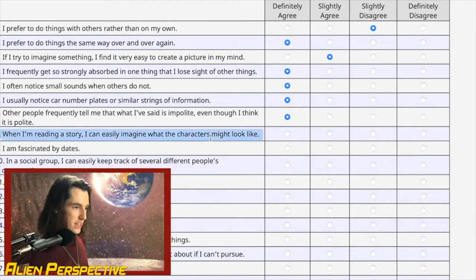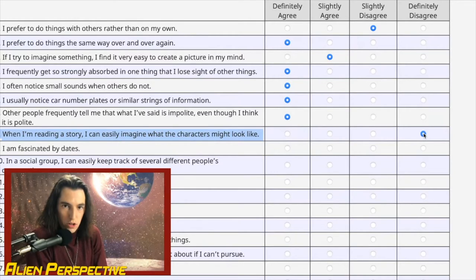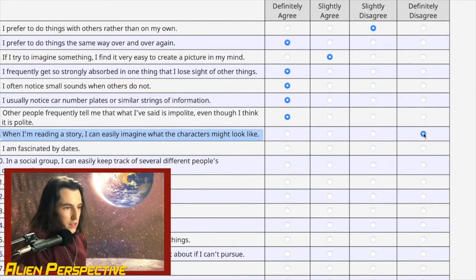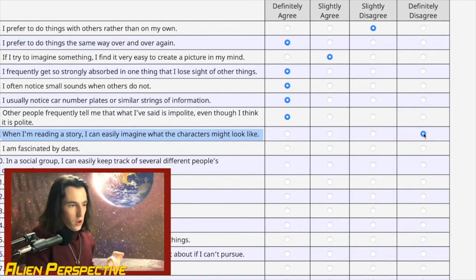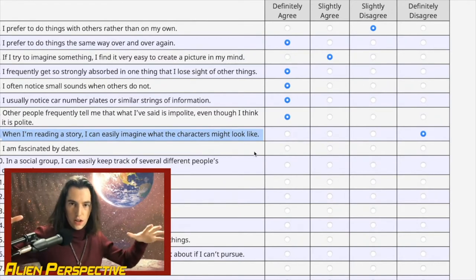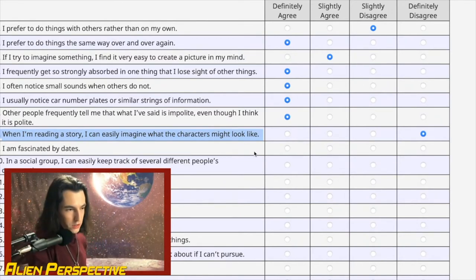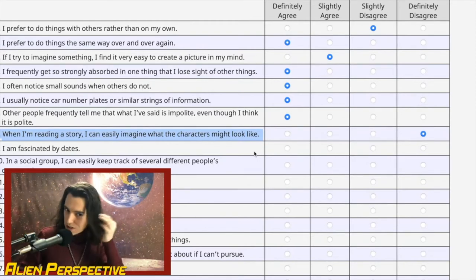Question 8: 'When I'm reading a story, I can easily imagine what the characters might look like.' No, not at all — this is probably one of the reasons I don't read a ton of fiction. The only fiction I really read is Lord of the Rings, and I can only visualize those characters because I've seen the movies. When reading or listening to an audiobook, I don't imagine a full scene — I imagine the specific detail being described. Like when they describe Aragorn's hair as 'flecked with gray,' all I see is that detail, not the full face.